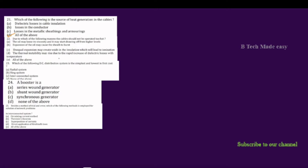The next question is: due to which of the following reasons should the cable not be operated too hot? The oil may lose its viscosity and start drawing off from higher levels — that is the correct option. Expansion of oil may cause the sheet to burst — correct. Unequal expansion may create voids in the insulation leading to ionization — correct. Thermal instability may rise due to rapid increase of dielectric loss with temperature — that is also a correct option.